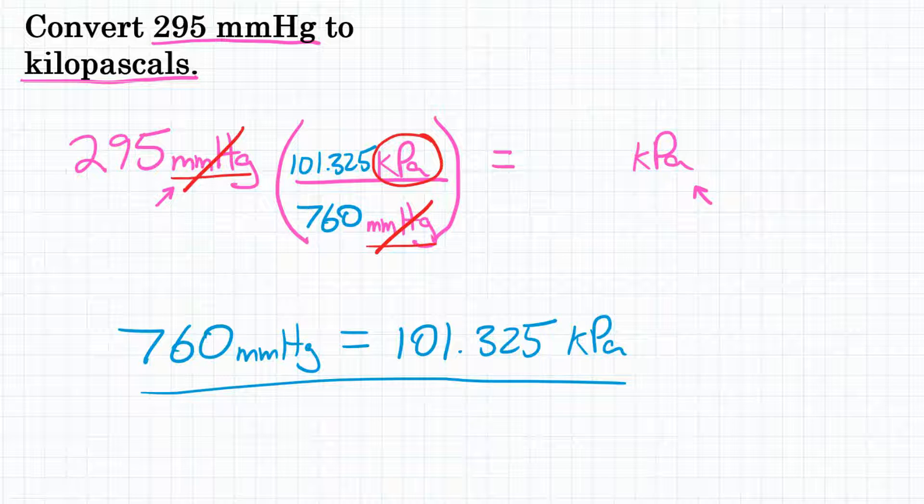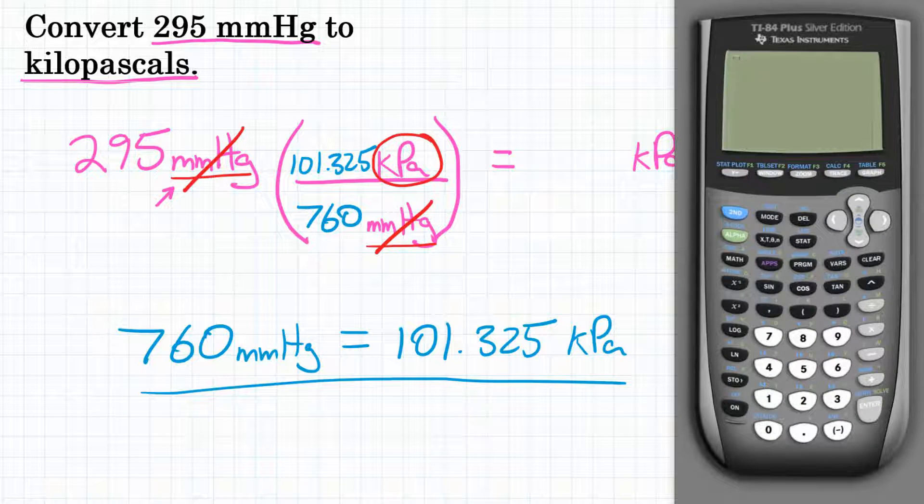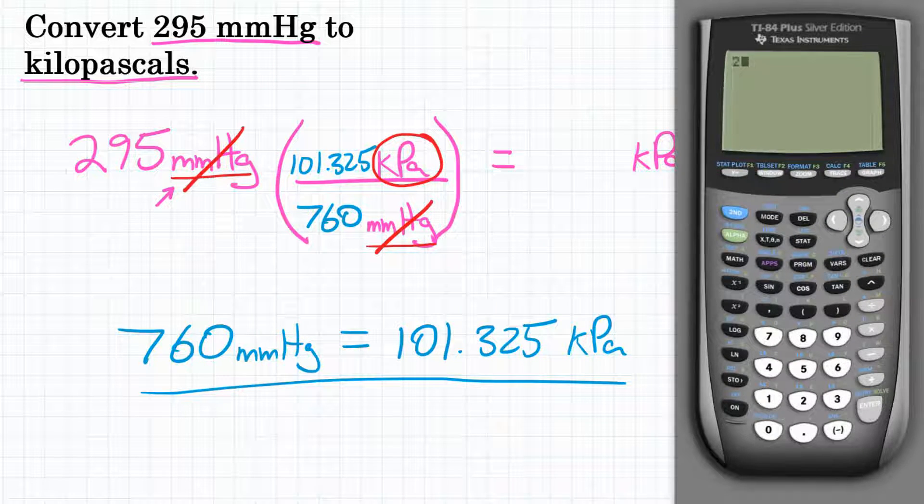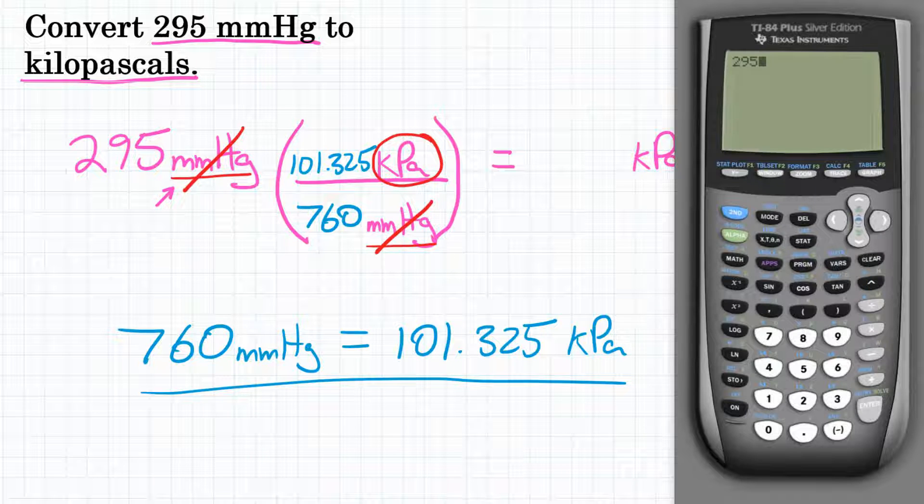Now we can plug this in our calculator. We're going to start with 295. Since we're multiplying by a fraction, we're going to multiply by the top and divide by the bottom. So we will multiply by 101.325 and then divide by 760.